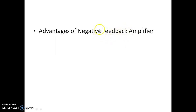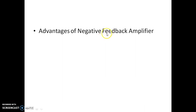We got the result that due to application of the negative feedback amplifier, the lower cutoff frequency decreases by a factor of (1 + G_mid × H), and the higher cutoff frequency increases by the same factor (1 + G_mid × H).